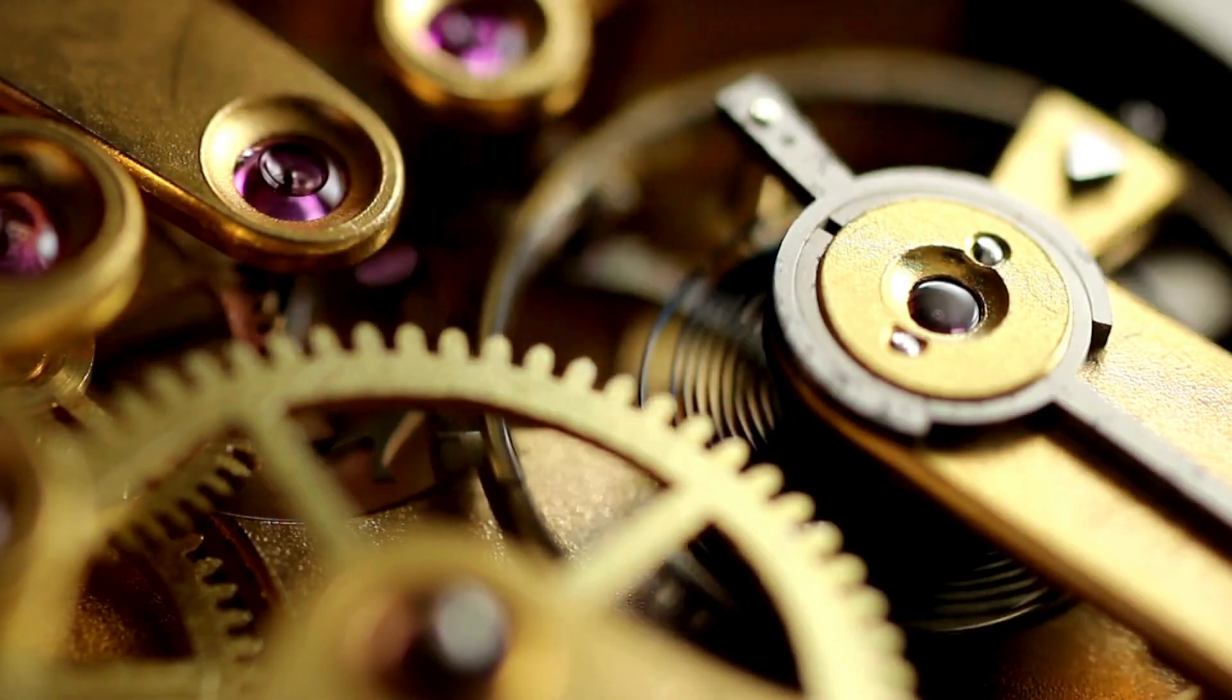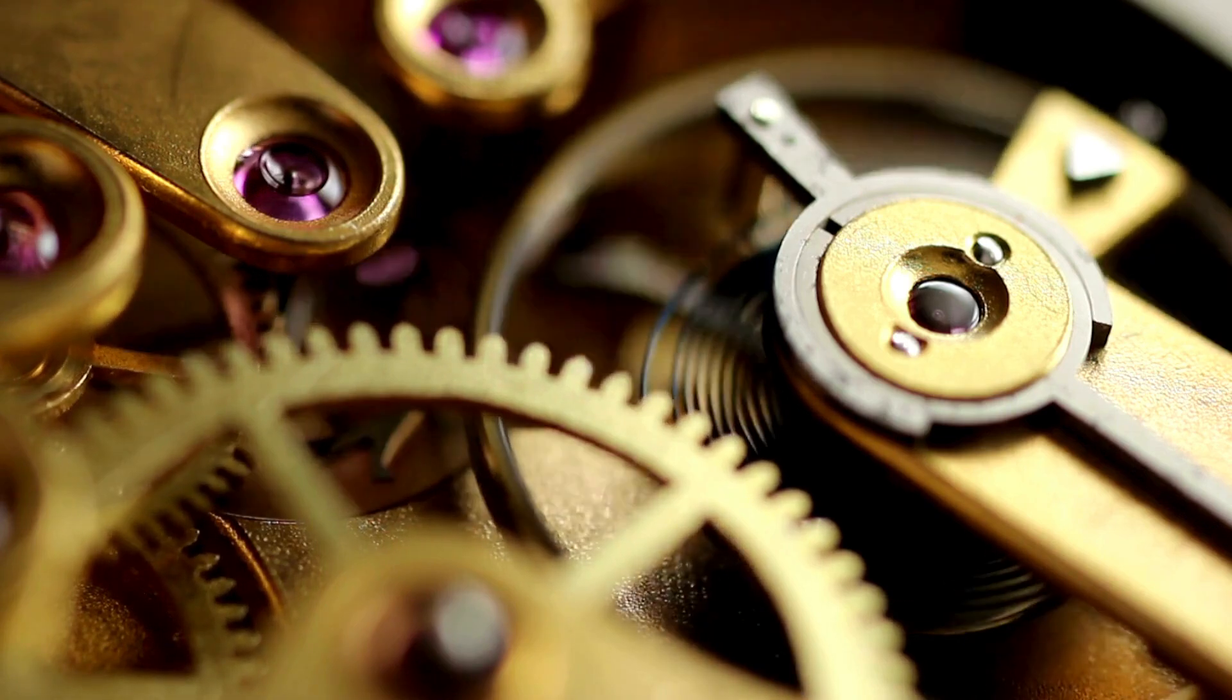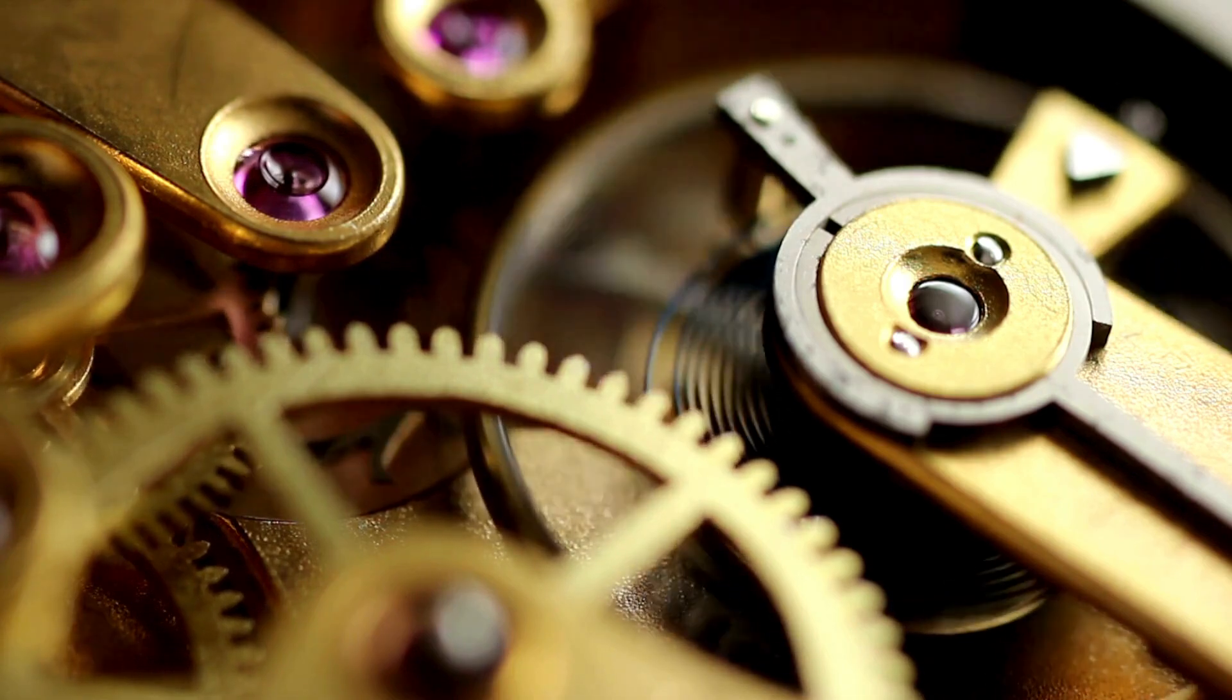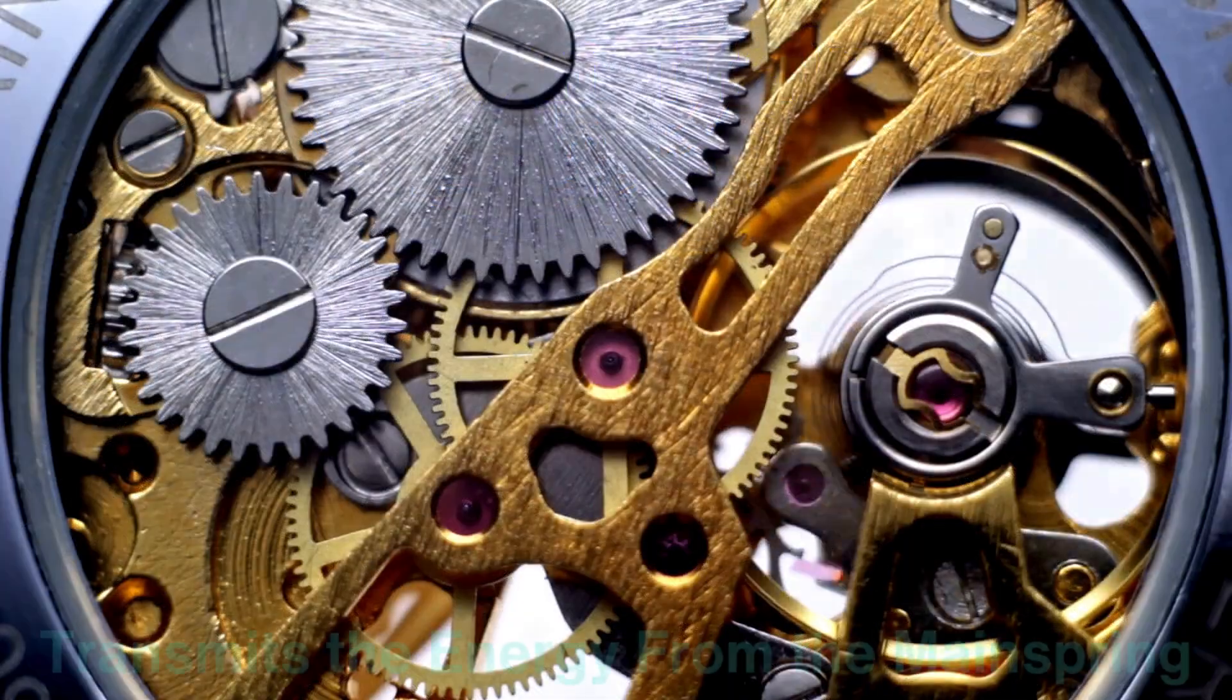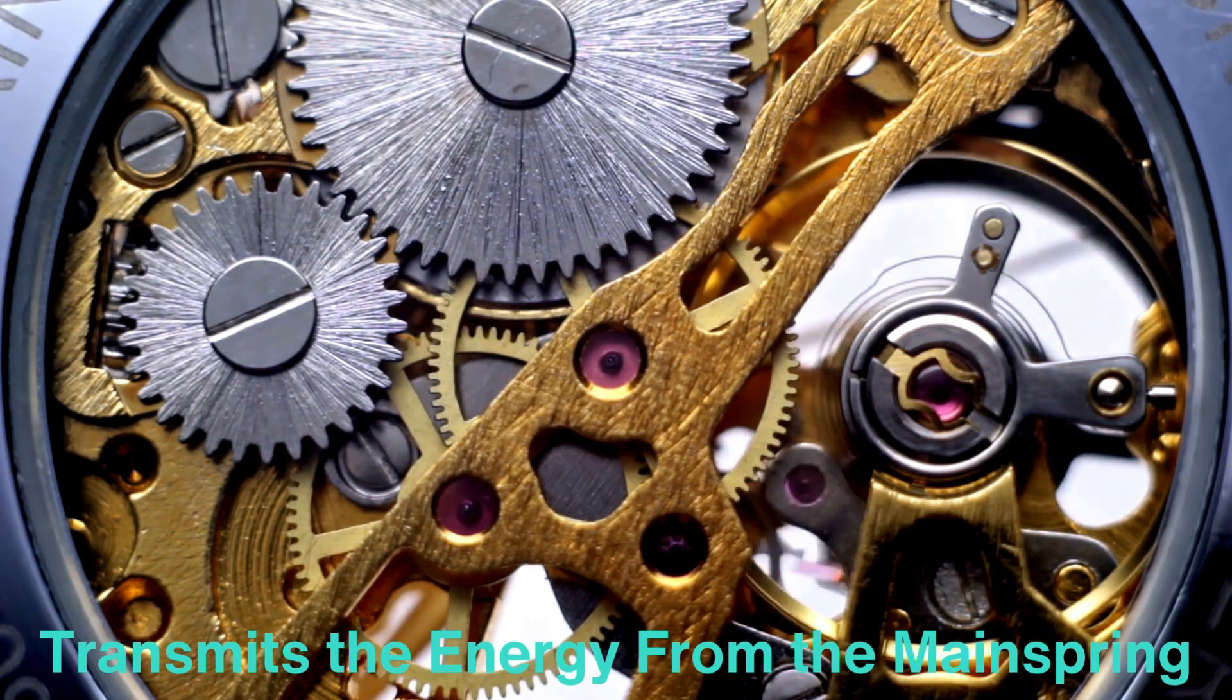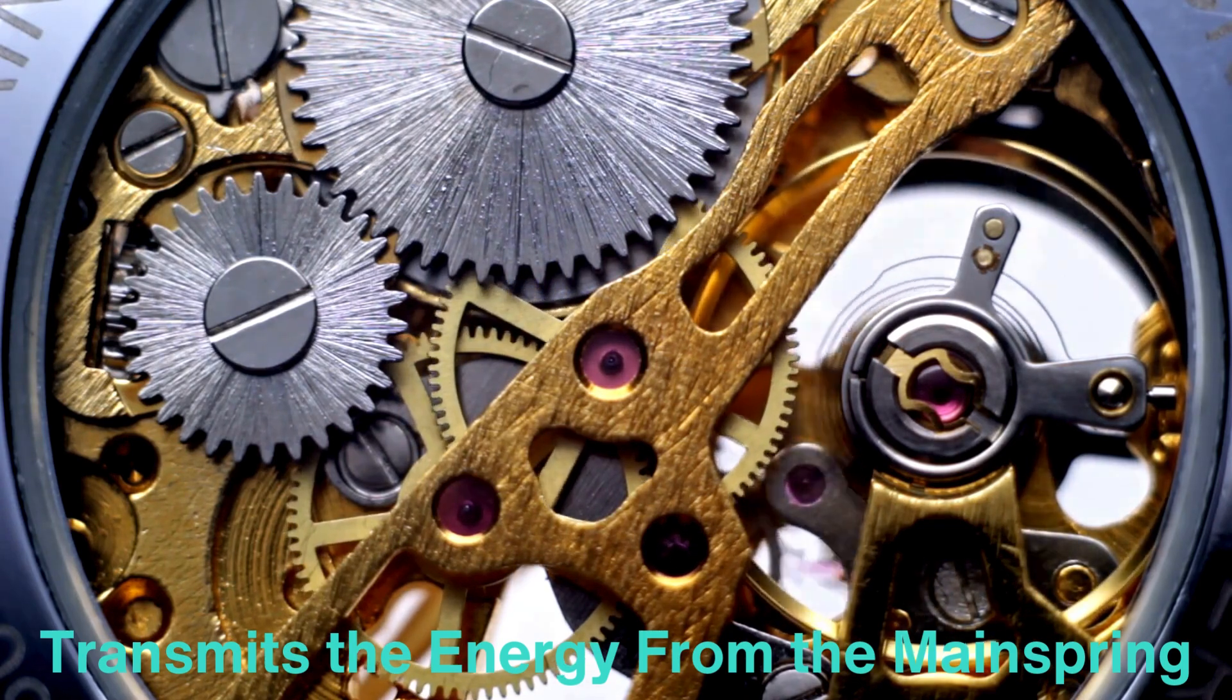So far, we've discussed how energy is stored in the mainspring and how the escapement and balance wheel regulate that energy. But how does this translate into the hands of the watch moving to display the time? This is where the gear train comes in. The gear train is a series of gears that transmits the energy from the mainspring through the escapement to the watch hands. The gear ratios in the gear train are carefully designed so that the hands move at the correct speed.